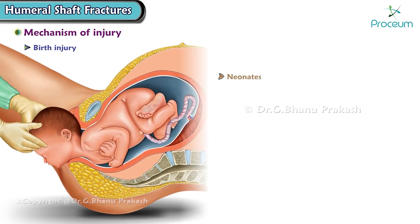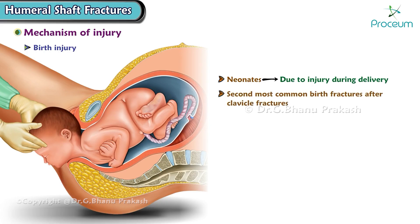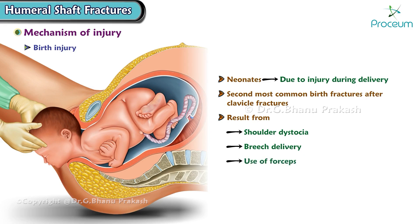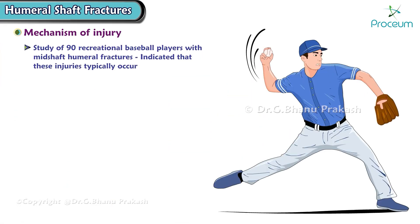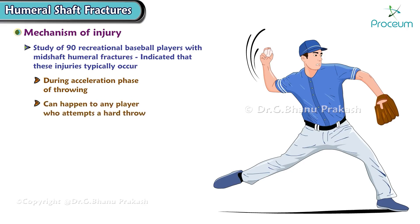In neonates, humerus fractures can occur due to injury during delivery. These fractures, particularly of the humeral shaft, are the second most common birth fractures after clavicle fractures, often resulting from shoulder dystocia, breech delivery, or the use of forceps. A study of 90 recreational baseball players with mid-shaft humeral fractures indicated that these injuries typically occur during the acceleration phase of throwing and can happen to any player who attempts a hard throw, emphasizing the importance of proper training and form.